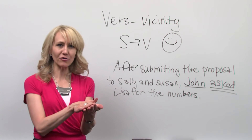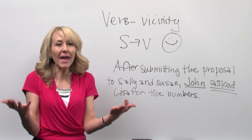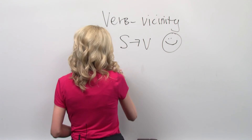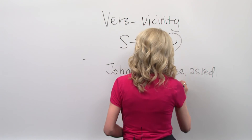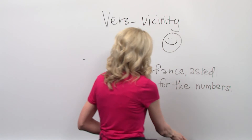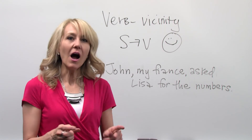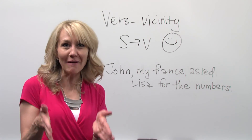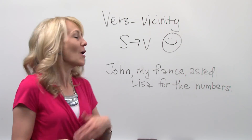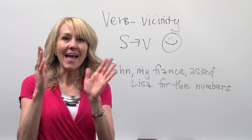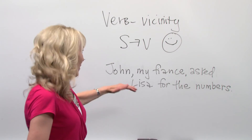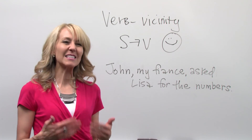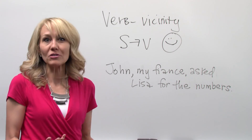Sometimes we do have information that separates the subject and the verb — that's okay, we just don't want to make it too long. For example: 'John, my fiancé, asked Lisa for the numbers.' A short interrupted phrase describing the subject is fine, especially if it's really important or helpful to understanding more about the subject. The verb doesn't have a problem with that.